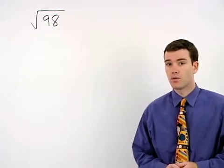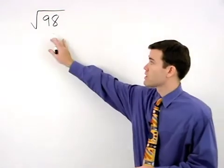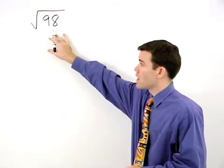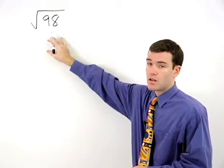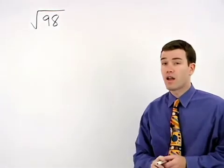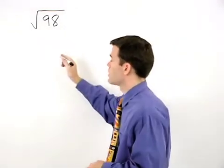To simplify a square root where the number inside the radical is not a perfect square, like the square root of 98, we start by making a factor tree for the number inside.